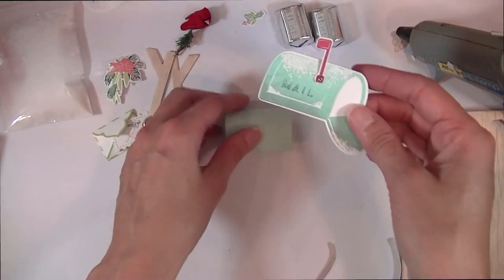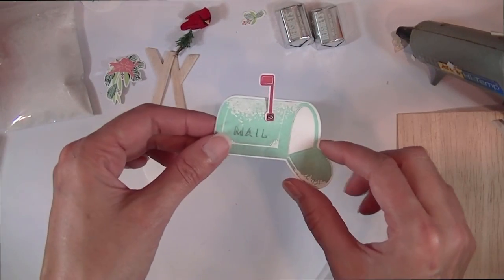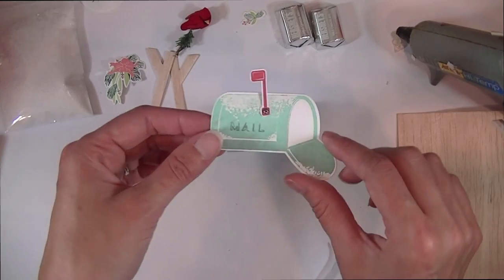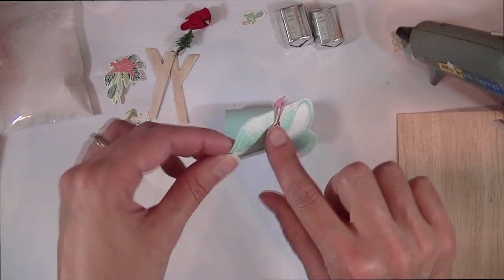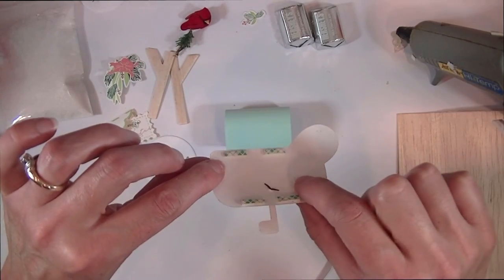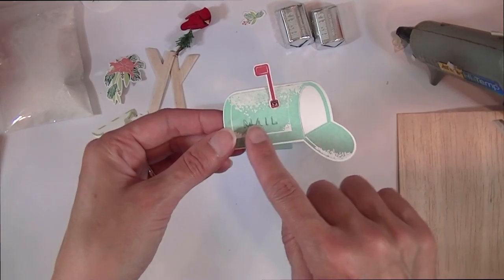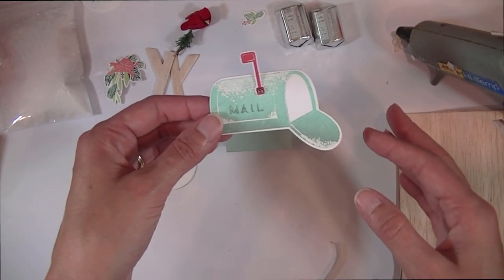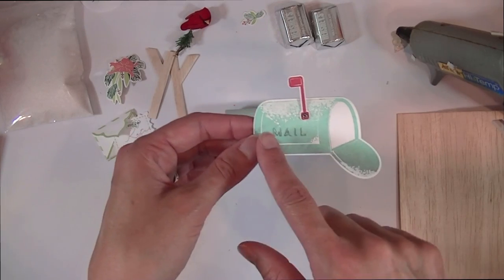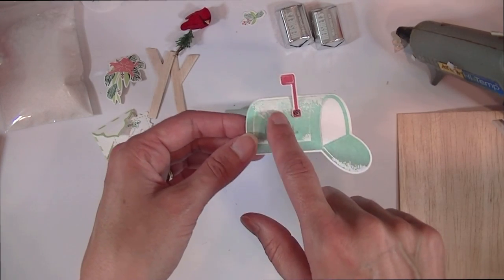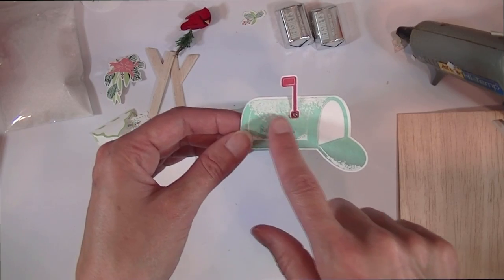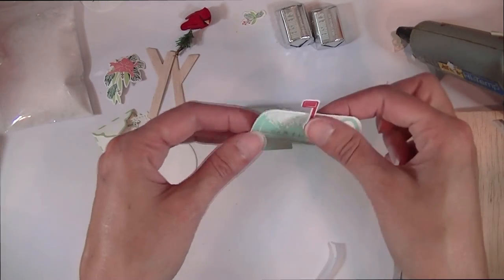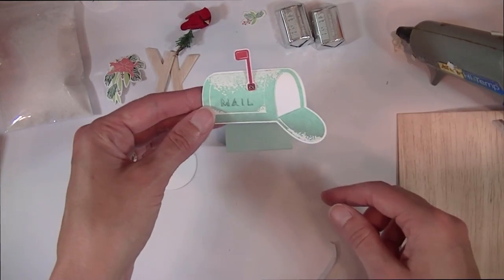All right, and then I'm going to take my mailbox die cut from the post and parcel kit, which I have already stamped. I have a little flag added to it with one of the tiny brads from the trimmings kit. I stamped it and then heat embossed the snow on the top of the mailbox as well to give that detail there.